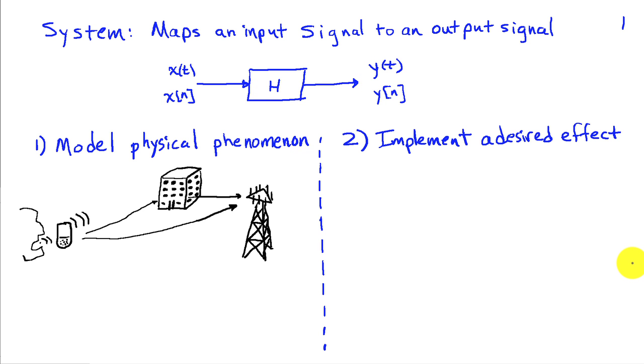Systems are used in signal processing for two primary purposes. One is to model the effects of a physical phenomenon of some sort. The other is to implement a desired effect on data or signals that we've recorded or are collecting.